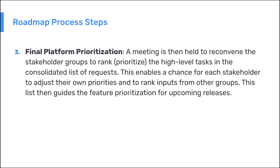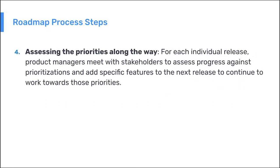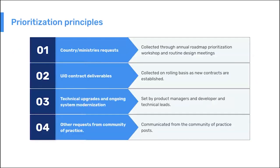They produce a list looking at how many people requested each item and the level of effort required by the development team to implement it. Then there's another meeting where stakeholders can provide input on this consolidated list. Of course, as development begins, the team may realize some features will take longer than planned, and urgent things sometimes pop up that need to be added later, so there are often adjustments to the prioritization underway.